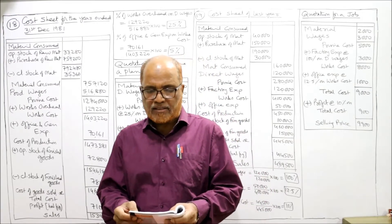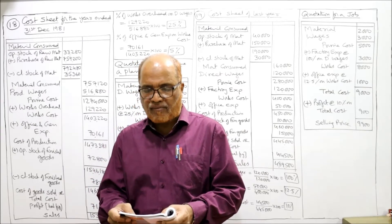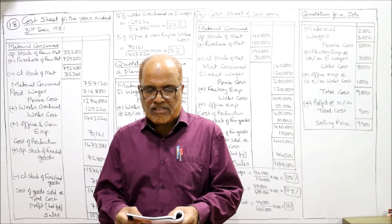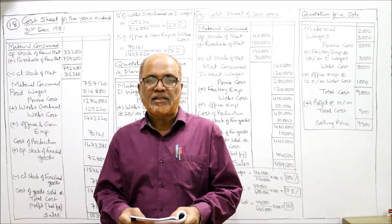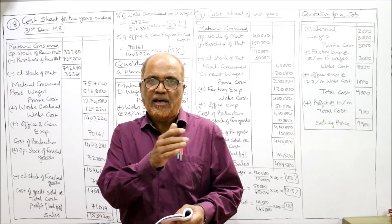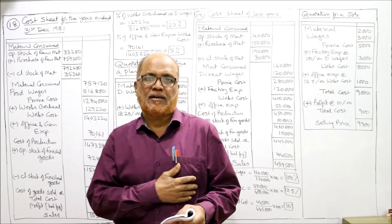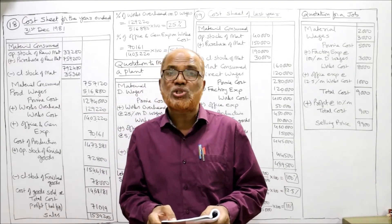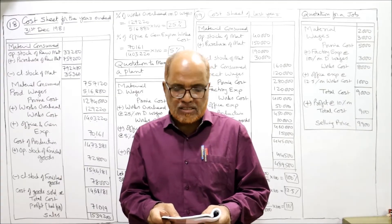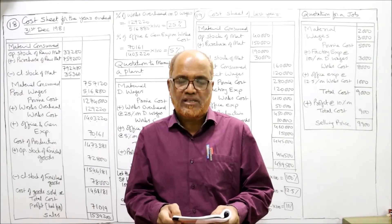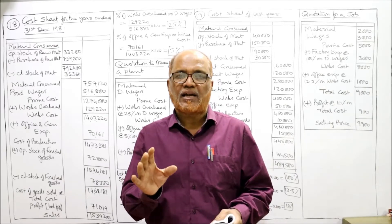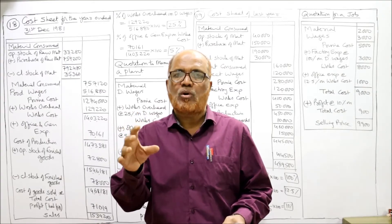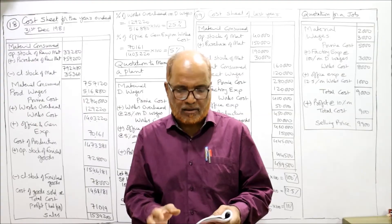And percentage of general overhead on productive wages, and percentage of general overhead on works cost — so two percentages we require. As usual, stock on 31st December 1980: finished goods 72,800, raw material 33,280, and purchase of raw materials 7,59,200, productive wages 5,16,880, sale of finished goods. Then stock at 31st December 1981 — so 31st December 1980 means last year and 31st December 1981 is the current year. Closing stock of finished goods, closing stock of raw material, works overhead 1,29,220, office and general expense 70,161.